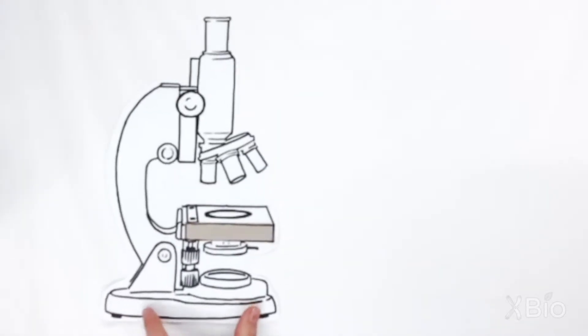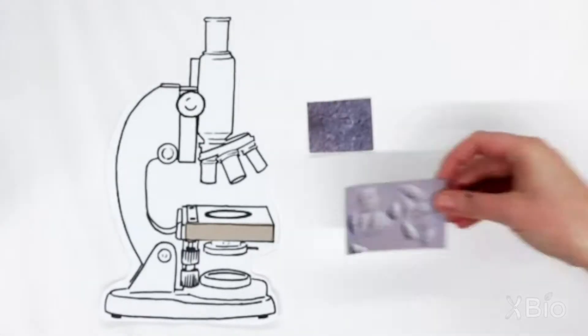Microscopes are an essential tool for biologists to see the tiny things they study. But no matter how much you zoom in with a microscope, some things are just really hard to see.